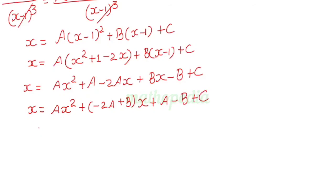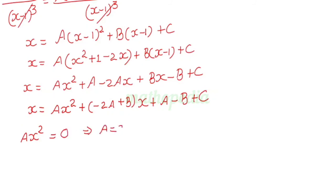Now equating the x squared terms on both sides: we have Ax squared on the right, but on the left side we do not have any x squared term, so it equals 0. From that, we get A equals 0.